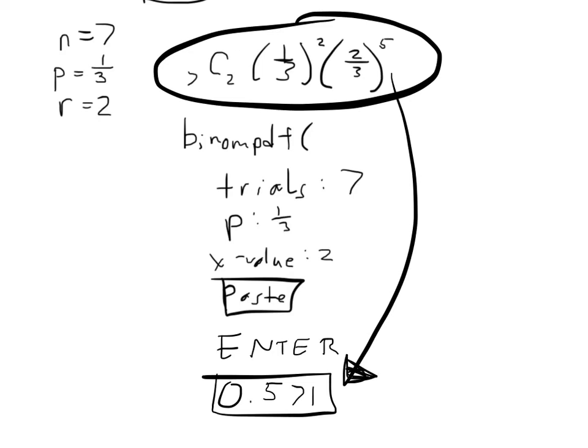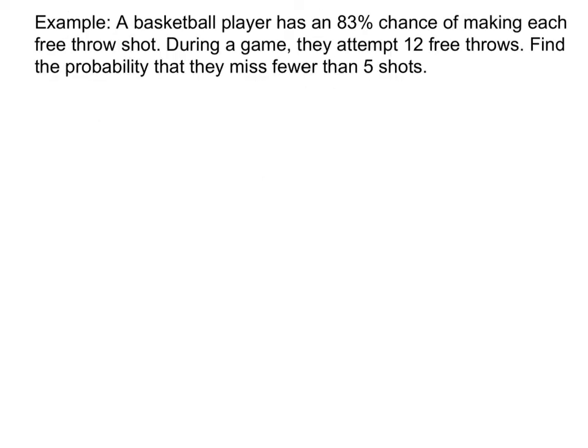So let's go on to another example. In this one, a basketball player has an 83% chance of making each free throw shot. During a game, they attempt 12 free throws. Right there, you know, oh, great. So my N equals 12. Find the probability that they miss fewer than 5 shots.